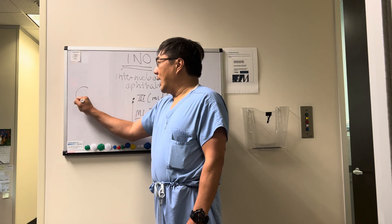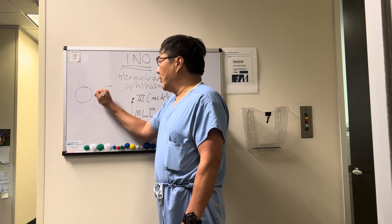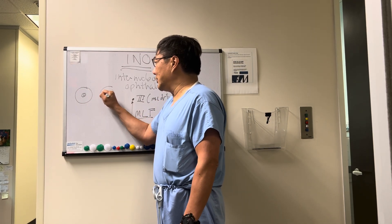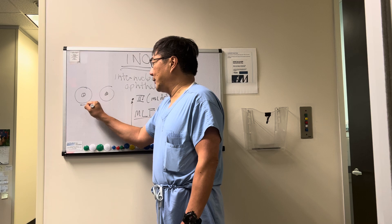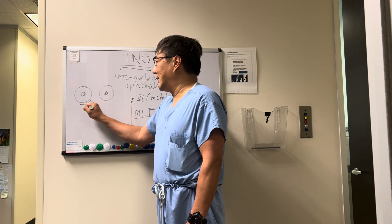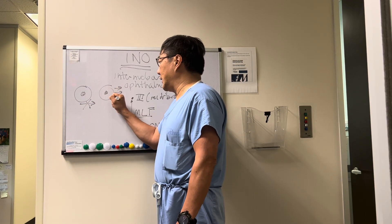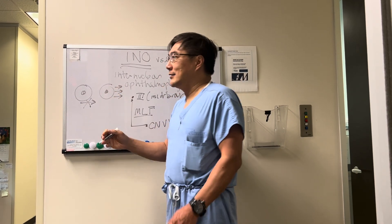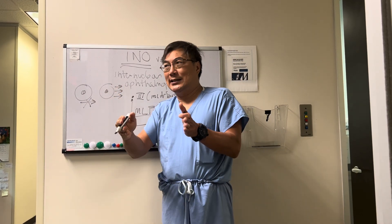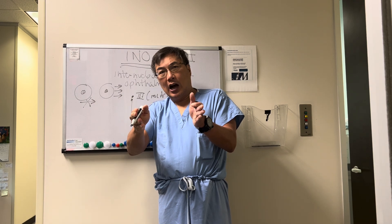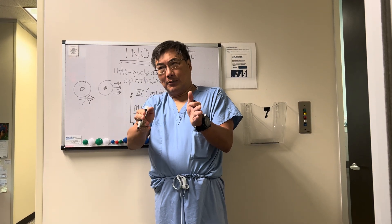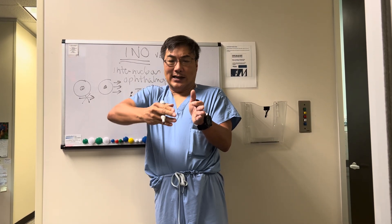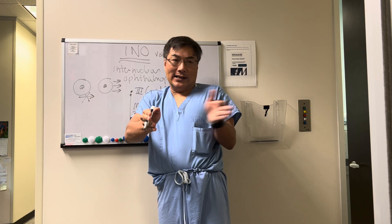With an INO, we have an adduction deficit — this eye cannot adduct — and then we have a dissociated horizontal abducting nystagmus on contralateral gaze. It looks like the eye can't adduct properly, or has an adduction lag, along with an abducting nystagmus.